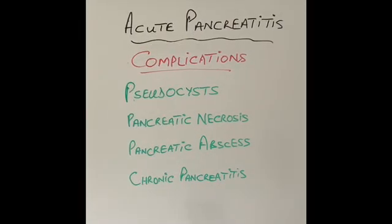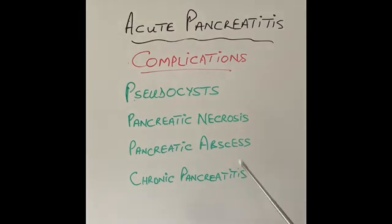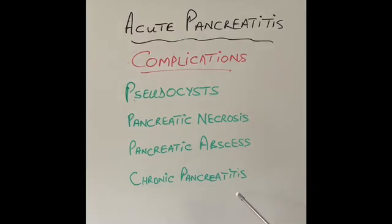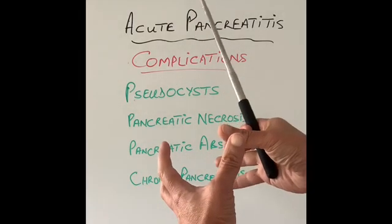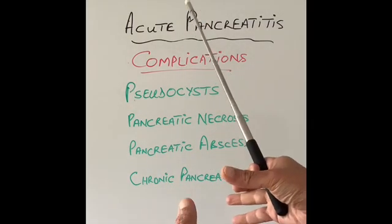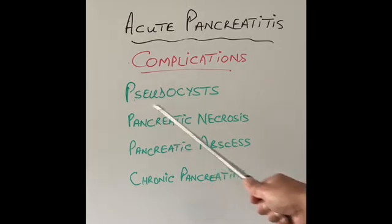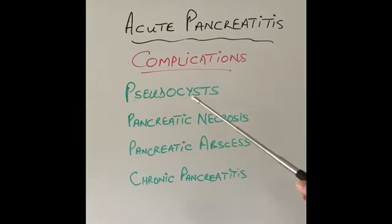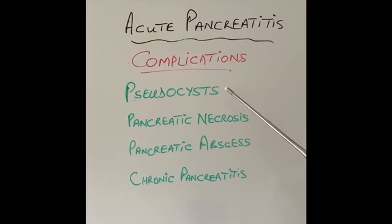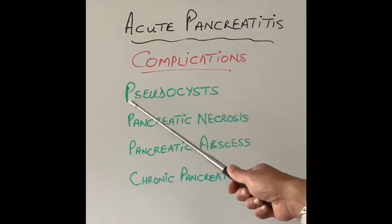Now let's talk about the complications of acute pancreatitis. Other complications like diabetes can also occur, especially in very severe pancreatitis, but most complications follow an attack of severe pancreatitis. The first complication is a fluid collection behind the stomach — a large bag of clear fluid with no infection or pus — called a pancreatic pseudocyst. Small ones can be left alone, but larger ones causing pain or problems can be treated with a camera, keyhole surgery, or open surgery.